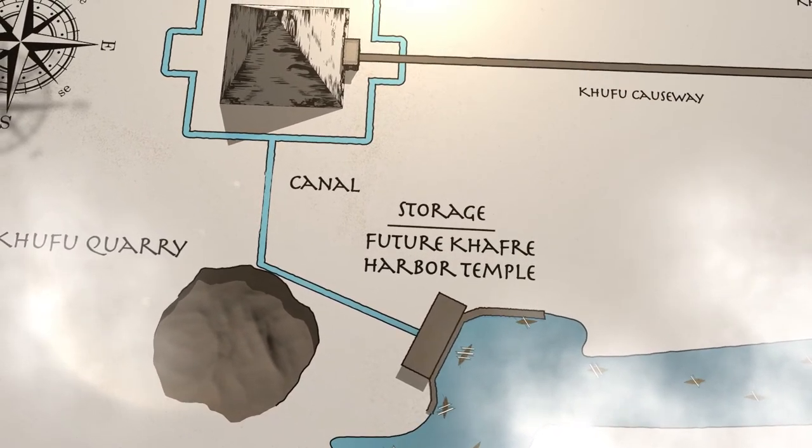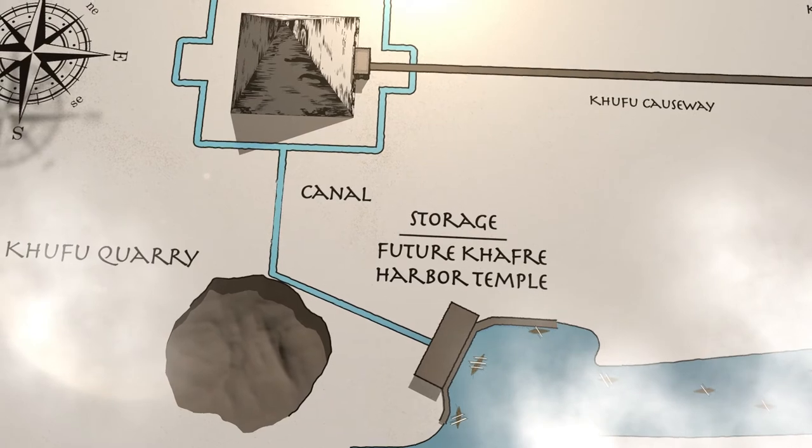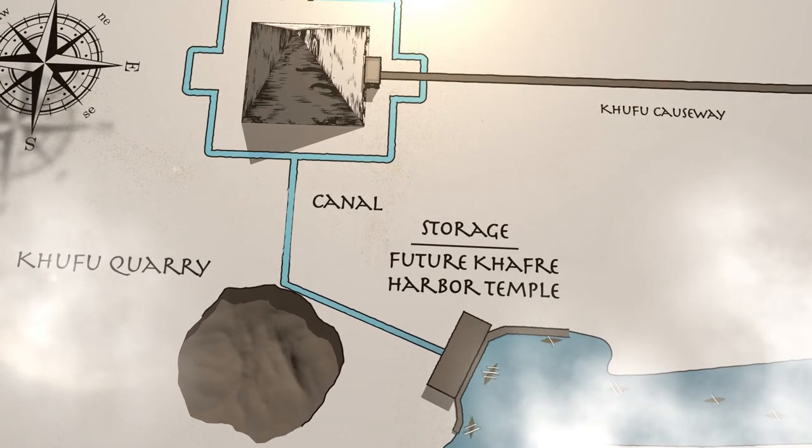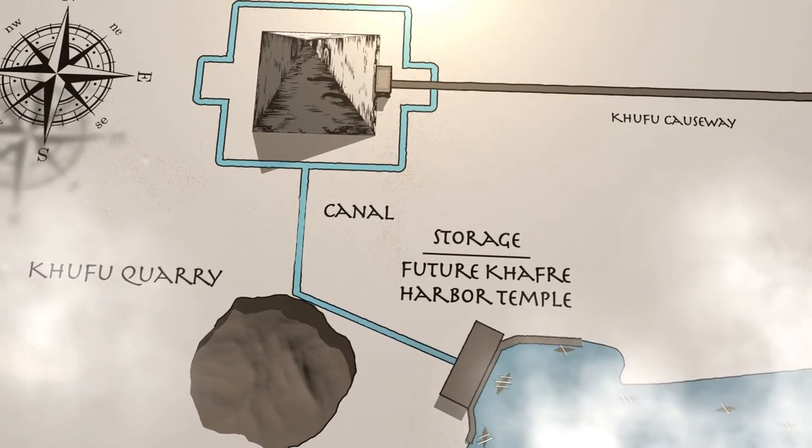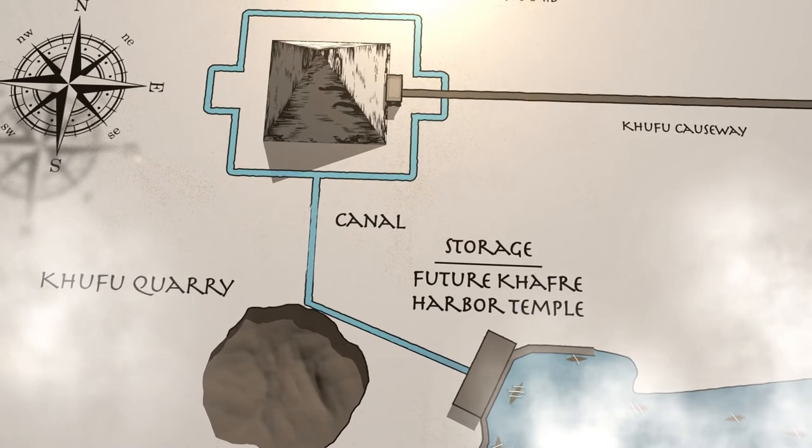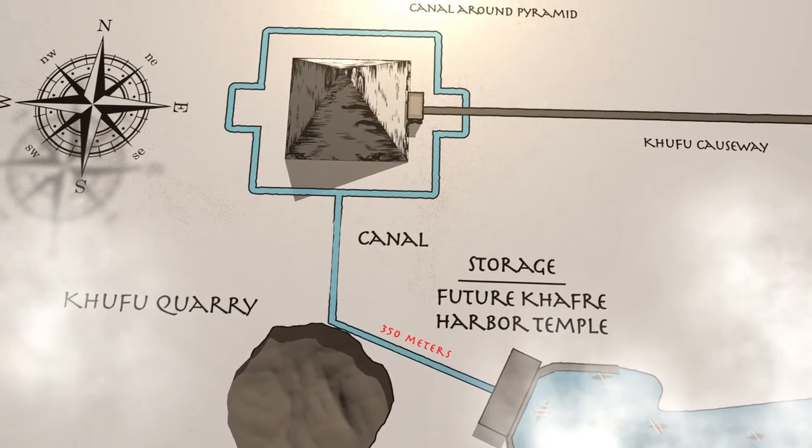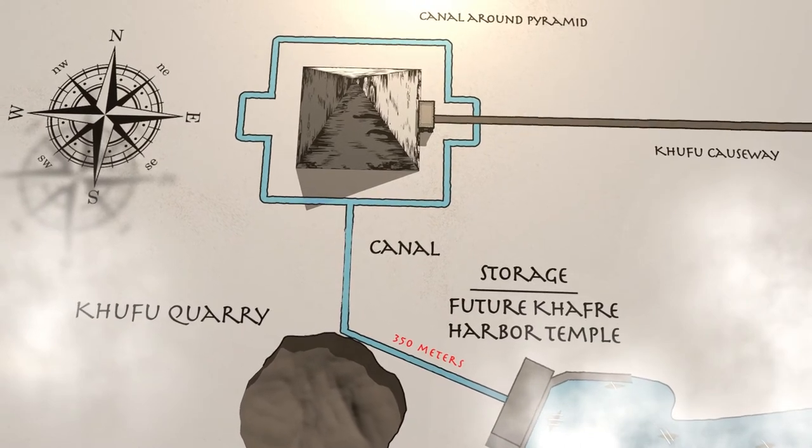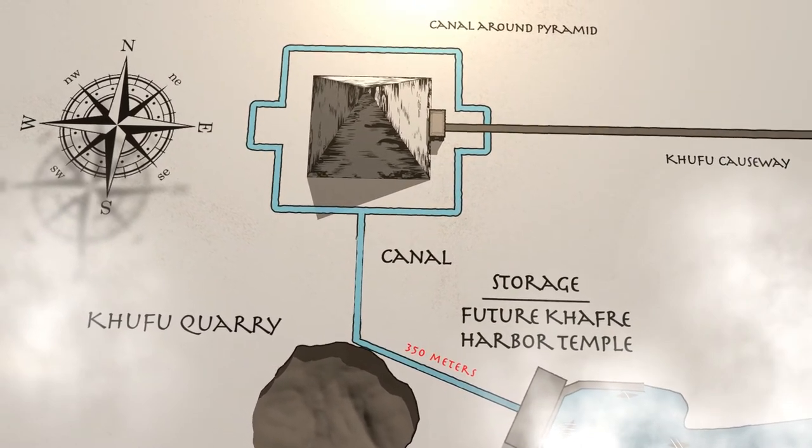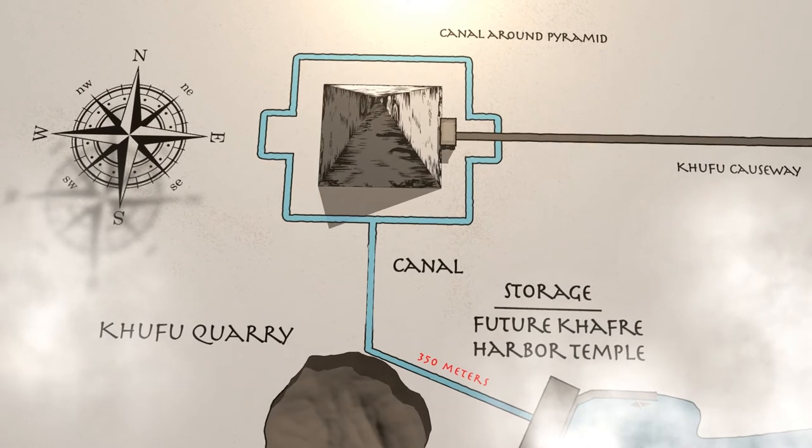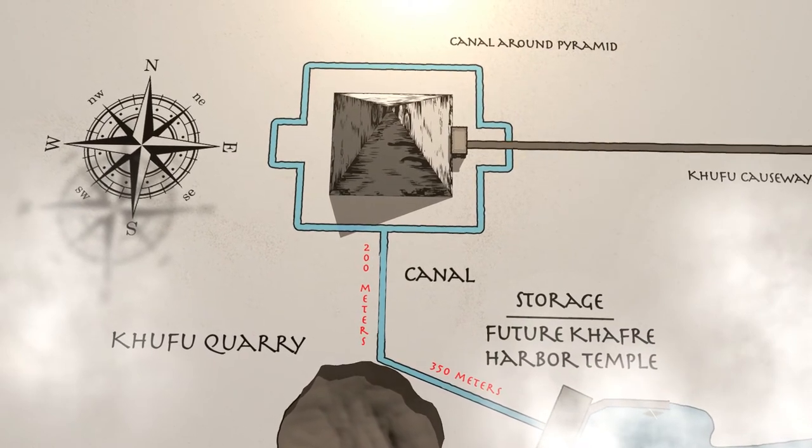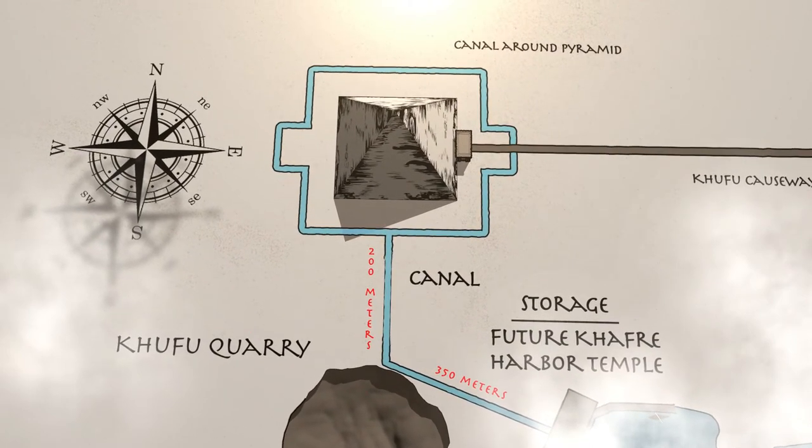This theory suggests a canal ran from the Khufu basin to the base of the pyramid. The canal started close to the Khufu Harbor Temple's present site, traveling west and slightly north for about 350 meters to the Khufu quarry. At Khufu quarry, the canal turned north, stretching approximately 200 meters before reaching the canal surrounding the pyramid base.